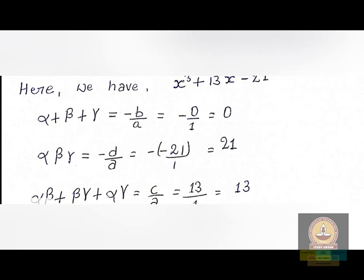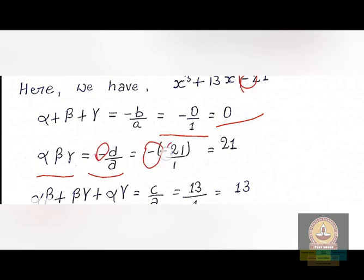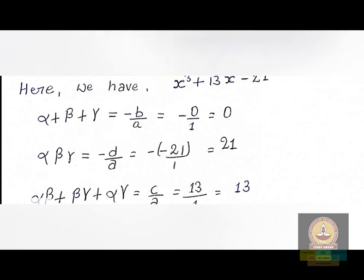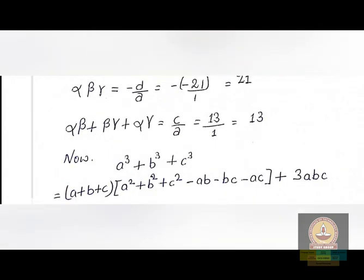We have alpha + beta + gamma = −0/1 = 0 as given. For the product alpha·beta·gamma = −d/a = −(−21)/1 = +21. For alpha·beta + beta·gamma + gamma·alpha = c/a = 13/1 = 13.